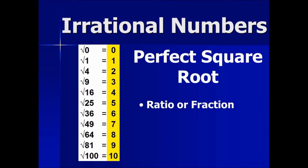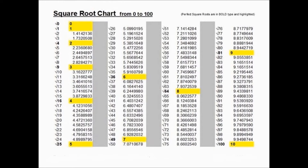The solutions can be made into a fraction or a ratio. In decimal form, they end or they repeat. Here is a chart of all the square roots between 0 and 100. The perfect square roots are highlighted in yellow. The rest are non-perfect square roots.